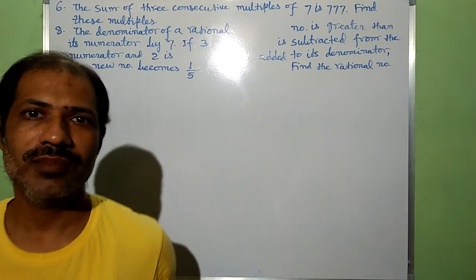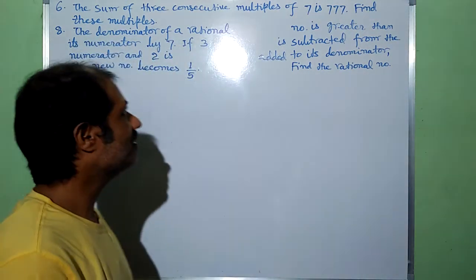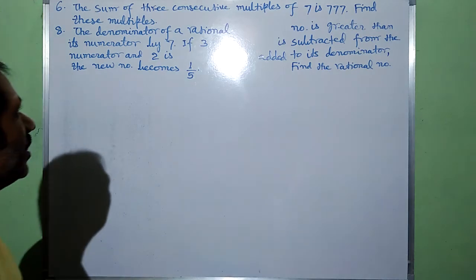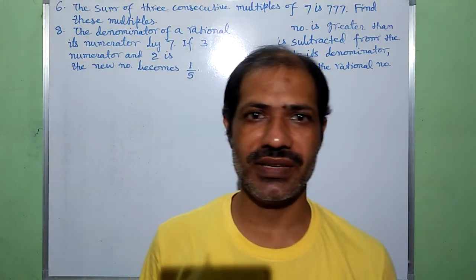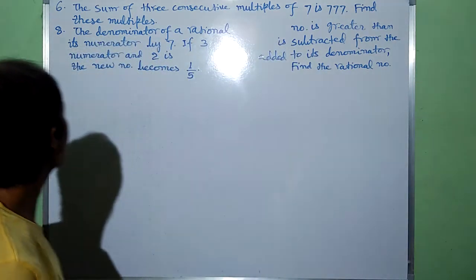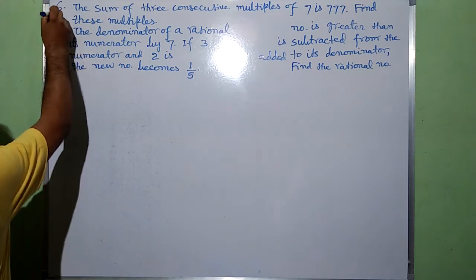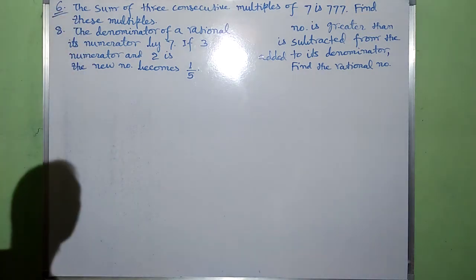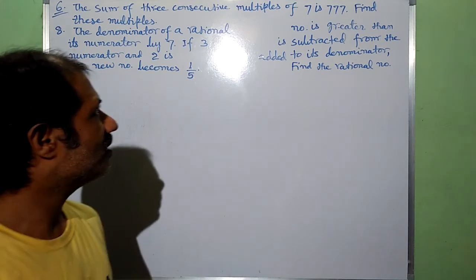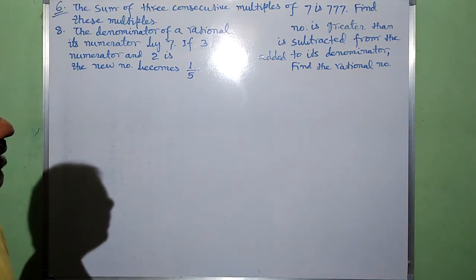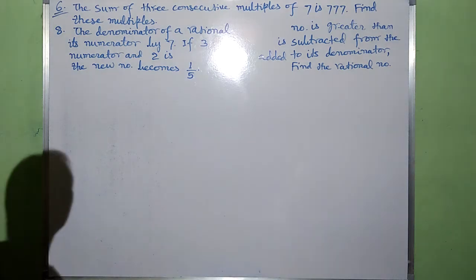Hello everyone. I am going to solve two questions related to linear equations in one variable for the students of extended 8th DAB schools. The first question is: the sum of three consecutive multiples of seven is 777. Find these multiples.